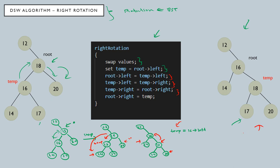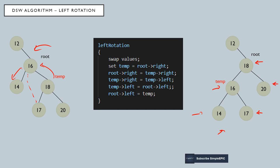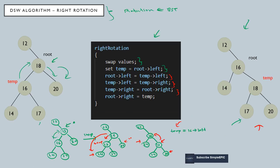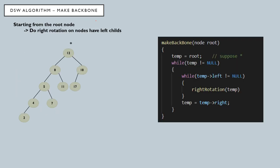That is how right rotation works in the DSW algorithm. In the exact same manner you can understand left rotation — it is just the reverse. If I perform left rotation, 18 will come up, 16 will go down, and 17 will be attached to 16. The final outcome tree will have 18 on top, 16 on the lower side, 17 attached to 16, and 14 and 20 remaining. Nothing new — if you understand right rotation, you can easily understand left rotation.